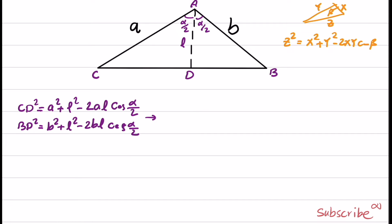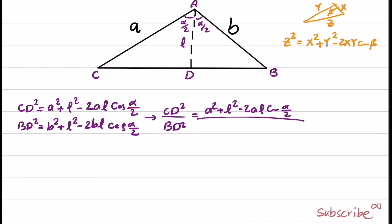From these two equations, I can obtain the relation: CD squared over BD squared equals (A squared plus L squared minus 2AL·cosine(alpha/2)) over (B squared plus L squared minus 2BL·cosine(alpha/2)).